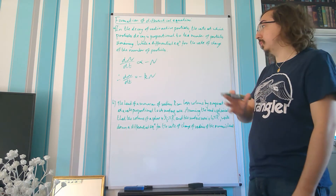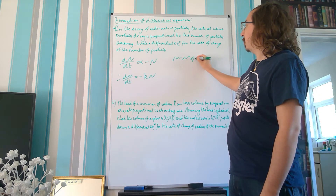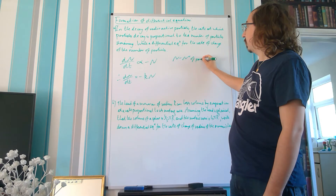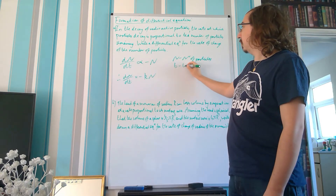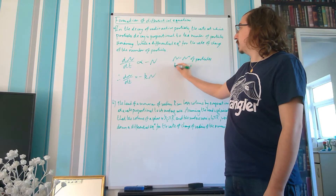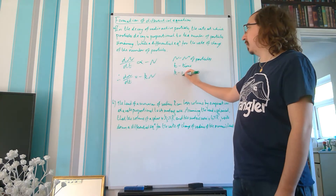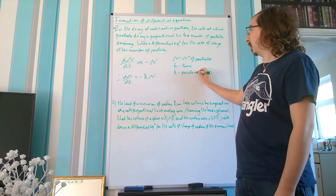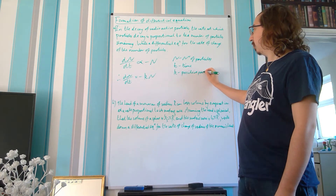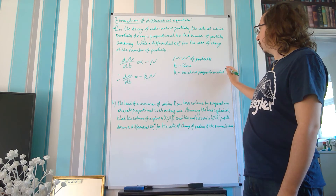We just need to define our variables: N is the number of particles, t is time, and K — because we have the minus sign already — is a positive proportionality constant.